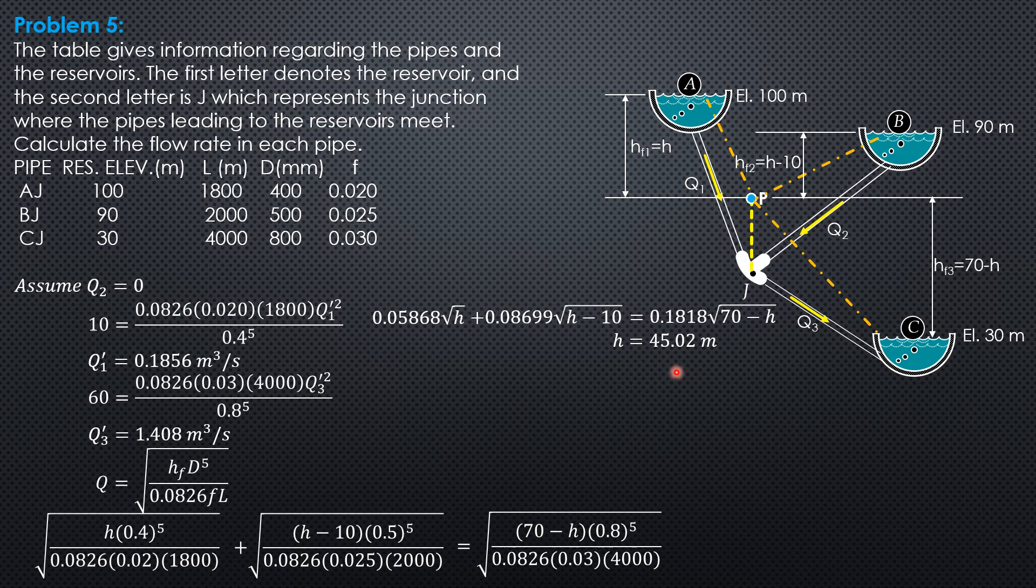Having found H equals 45.02 meters, we can now compute Q1, 0.05868 square root of 45.02. So Q1 equals 0.3937 cubic meter per second, and it is an outflow.